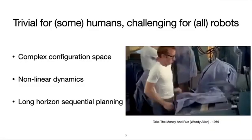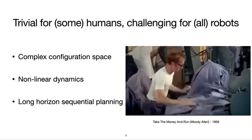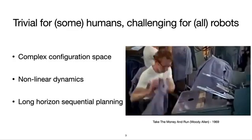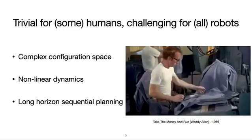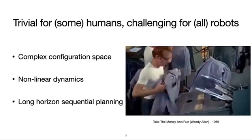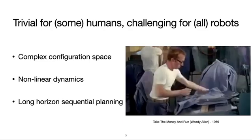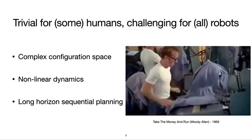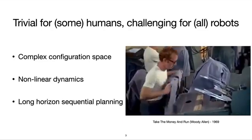This task is tedious, time consuming and can be non-trivial even for humans. Although robots have the potential to automate garment folding, there are still many challenges to overcome, as garments have a complex configuration space, nonlinear dynamics and the task is sequential.